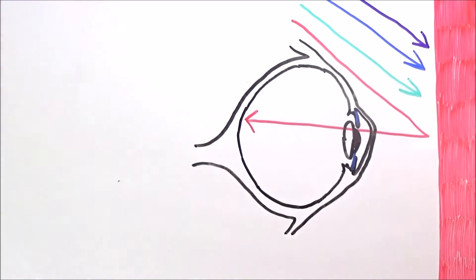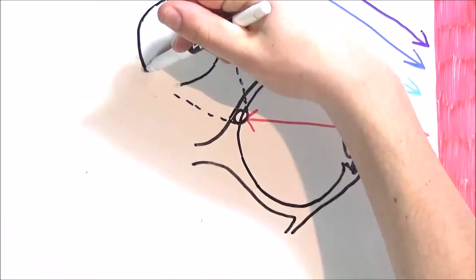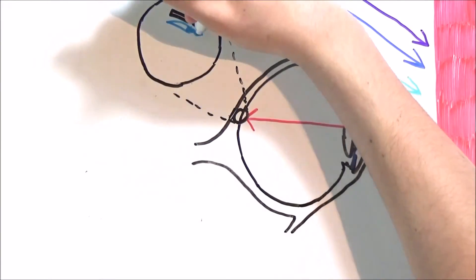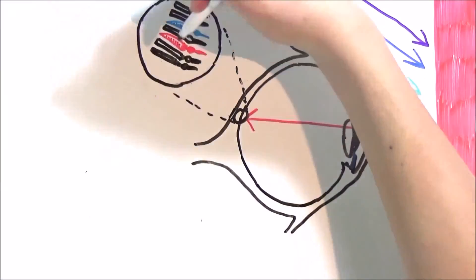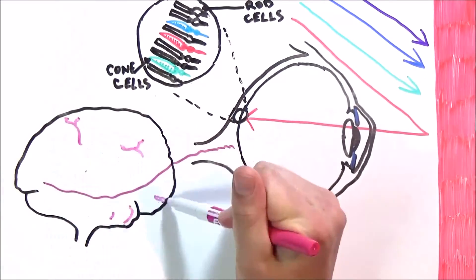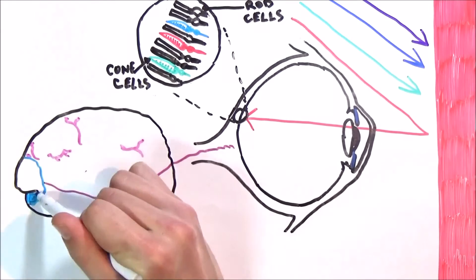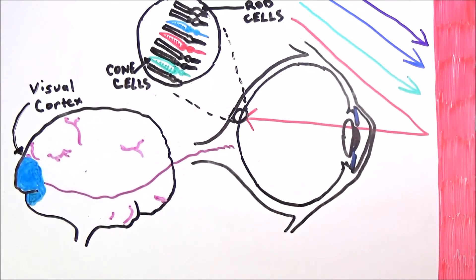Cone cells can detect three types of light: cyanolabe, chlorolabe, and erythrolabe, which together make up all the colors you see. The colors that these cone cells detect travel along the optic nerve to the visual cortex, a huge part of your brain dedicated to vision.